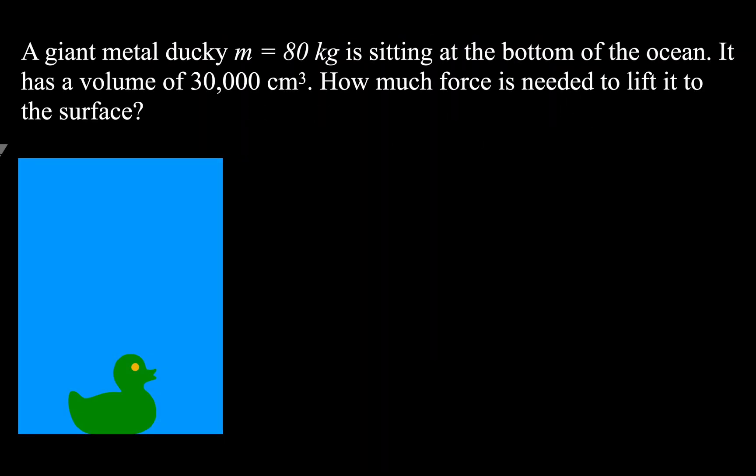Now let's do an example. We have a giant metal ducky at the bottom of the ocean with a given mass and a volume of 30,000 cubic centimeters. We want to know how much force is needed to lift it to the surface. You might say: multiply mass by 9.81 to get weight — but that's only valid outside the water. Inside the water, there's still a buoyant force because there's a difference in height and therefore a difference in pressure and force. So we need to calculate the buoyant force first.